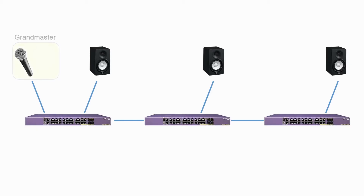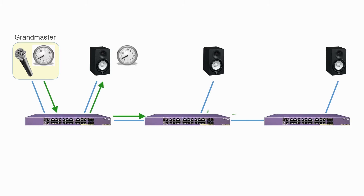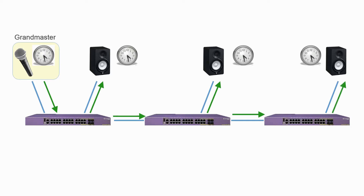There are some common factors to consider with PTP, and the first is the use of a grandmaster clock. A grandmaster clock is how we set a common time between media endpoints. The selection of a grandmaster clock is a negotiated process that elects a device considered to have the best clock. Many things define the best clock, but it's based on a defined process called the best master clock algorithm.